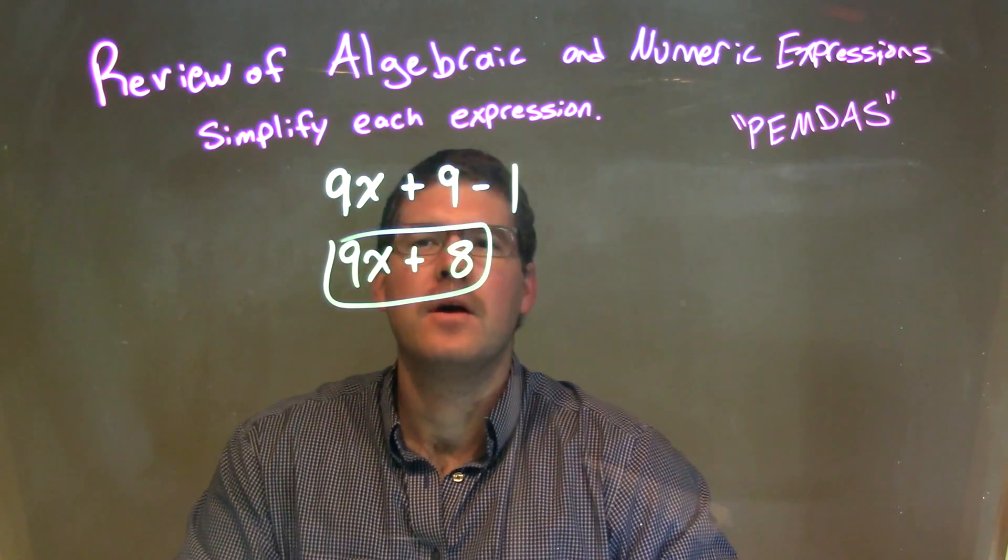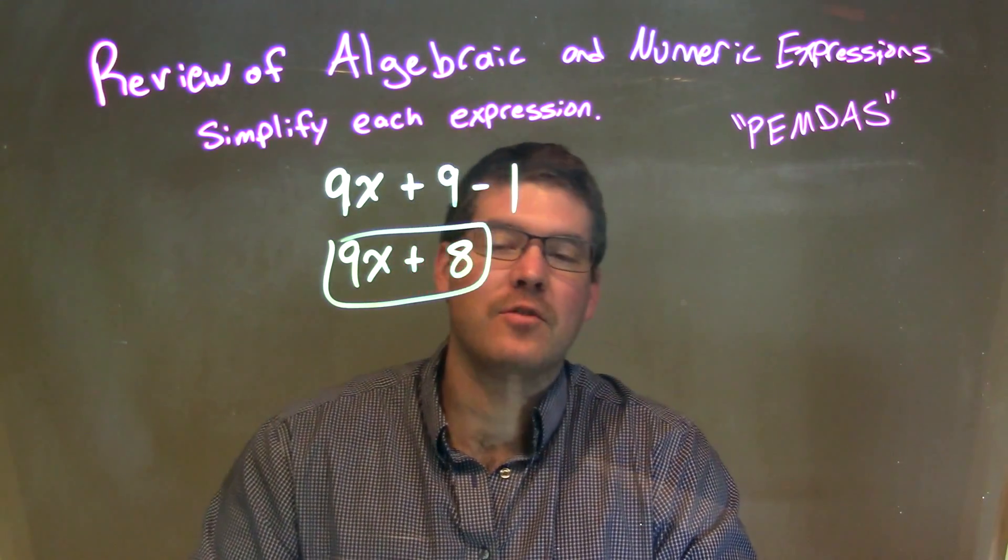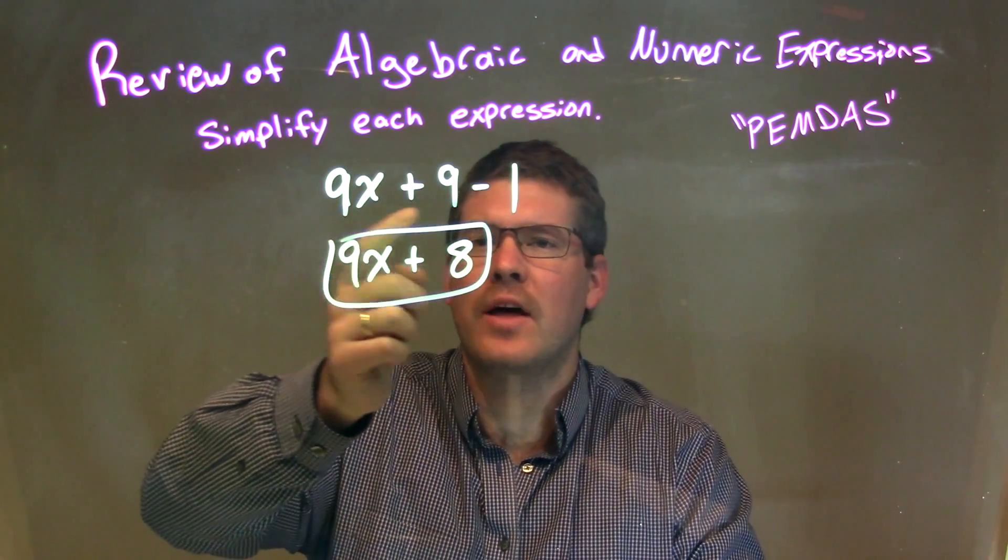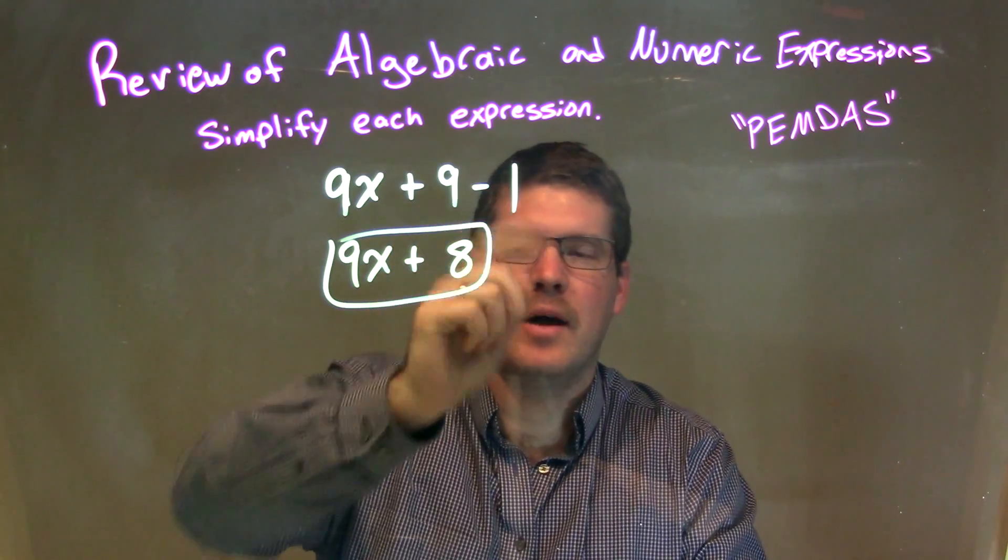So let's recap. We're given 9x plus 9 minus 1, and we had to simplify this. Well, we combined the like terms. We saw that our only like terms were the numbers 9 minus 1.